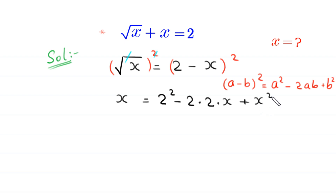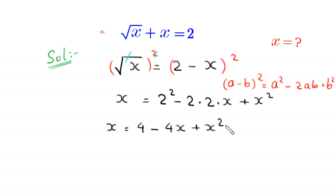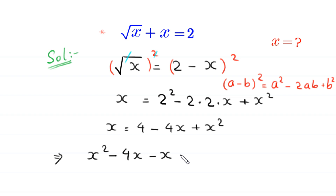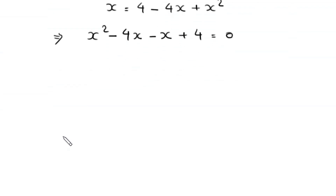So x is equal to 4 minus 4x plus x squared. Now we move this x to the right hand side. This gives us x squared minus 4x minus x plus 4 equals 0, which simplifies to x squared minus 5x plus 4 equals 0.